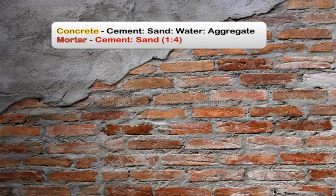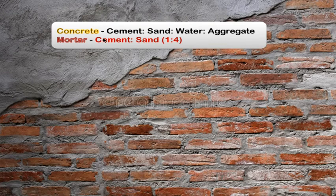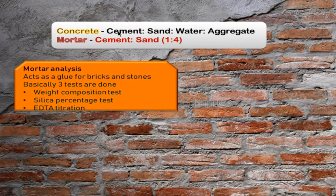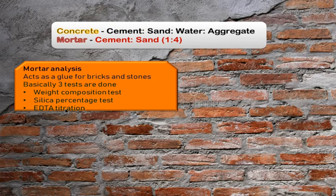Moving on to concrete and mortar — what is the difference? Concrete is the ratio of cement, sand, water and aggregates (like crushed stones or fly ash). Mortar is the ratio of cement to sand at a 1:4 ratio and is a thicker paste, whereas concrete is thinner than mortar. Mortar acts as a glue for bricks — it is placed between bricks during construction. Mortar is tested using weight composition test, silica percentage test, and EDTA titration.